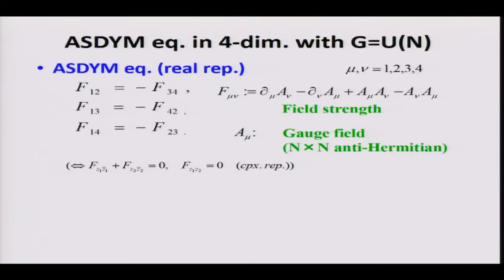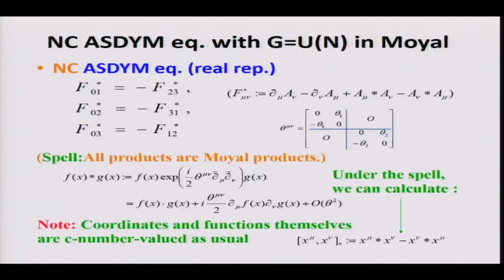This is the main equation — the standard anti-self-dual Yang-Mills equation. This is just the self-duality of the field strength in the sense of the Hodge dual. Let's start with the commutative theory and move to the non-commutative situation. In my talk, the gauge group is U(N).